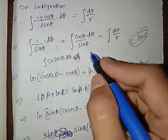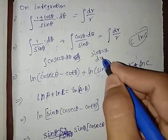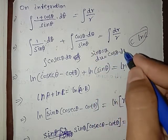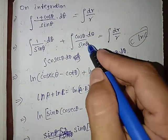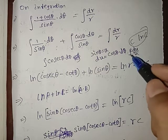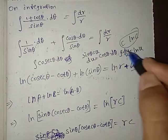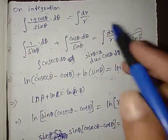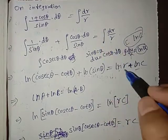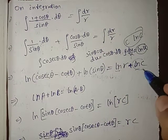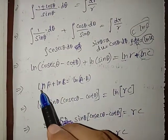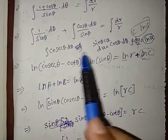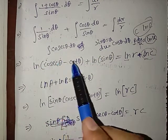Similarly, letting u = sinθ, du = cosθ dθ, so the integral of cosθ/sinθ dθ is ln|sinθ|. Combining both integrals on the right side and integrating dr/r on the left, we get ln r + ln c = ln|cscθ − cotθ| + ln|sinθ|, which simplifies to ln(rc) = ln|sinθ(cscθ − cotθ)|.